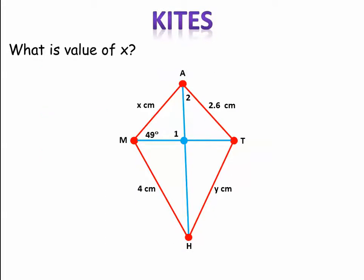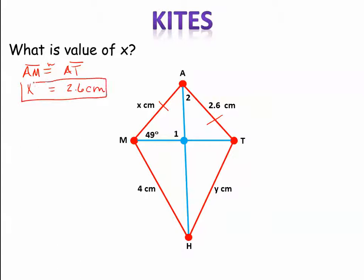Now they want to know what is the measure of X, which is segment MA. Remember when we learned about the special properties of kites — there are two sets of congruent segments. So segment AM is congruent to segment AT. AM is X, and AT is 2.6. So there's your answer for segment AM: X equals 2.6.